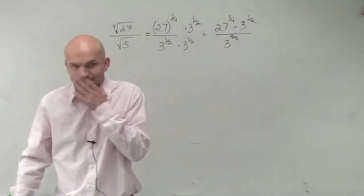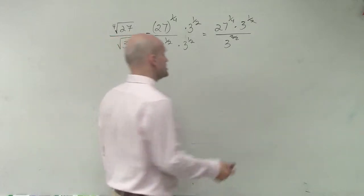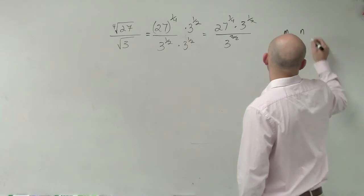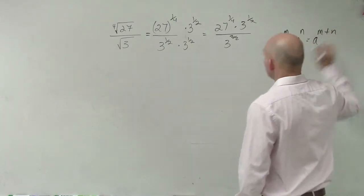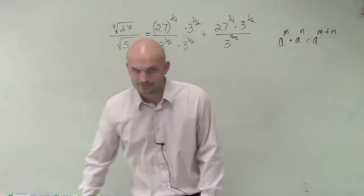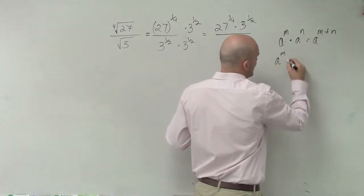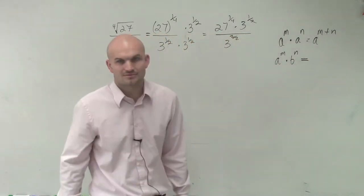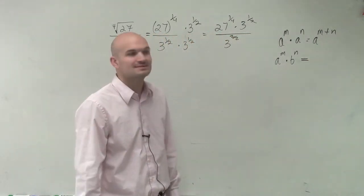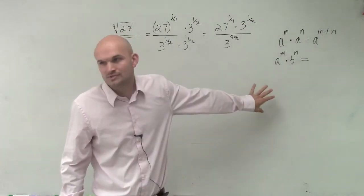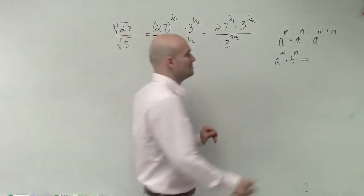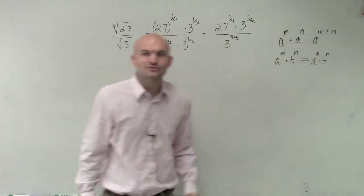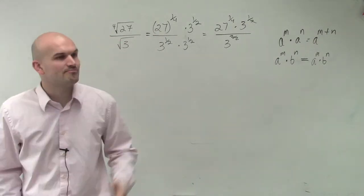But here comes our problem now, because now we've got an issue. Because there's a special rule. We said a to the m times a to the n equals a to the m plus n. We did not say a to the m times b to the n. What does that equal? We haven't gone over any kind of rules with this. So guess what? This is just going to be a to the m times b to the n. You can't do any special operations when your bases are different.